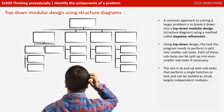Using top-down design, the task the program needs to perform is split into smaller sub-tasks. Each of these sub-tasks can be split up into even smaller sub-tasks if necessary. The aim is to end up with sub-tasks that perform a single function or task that can be tackled as small, largely independent modules.